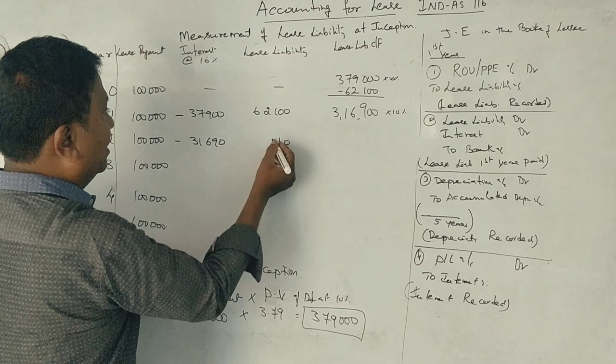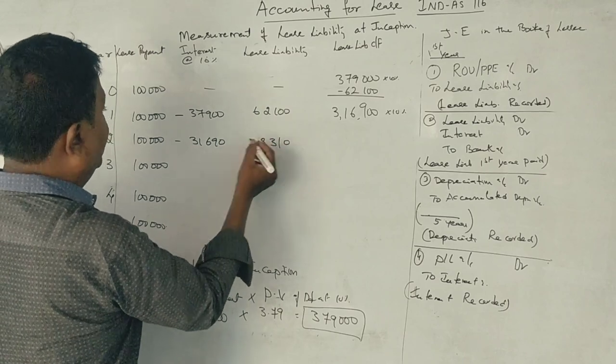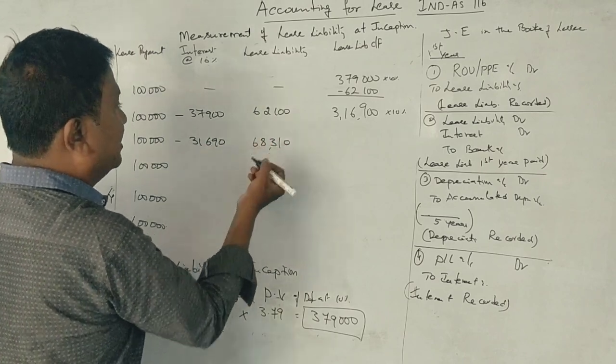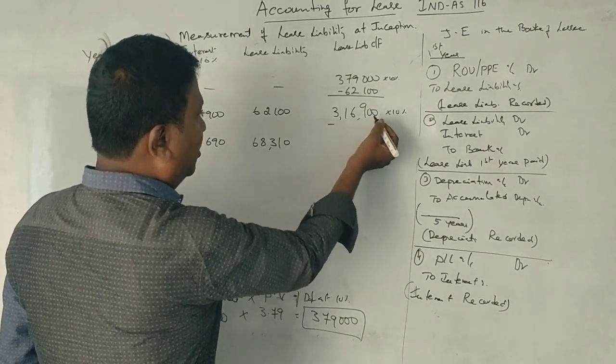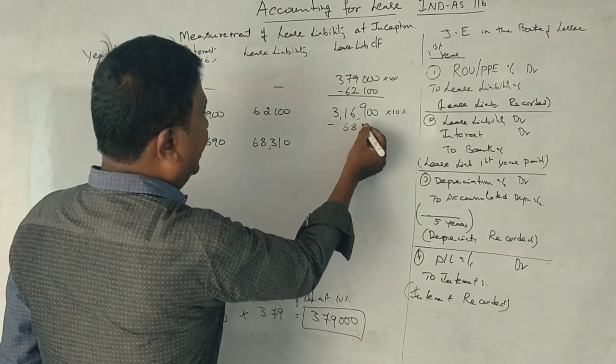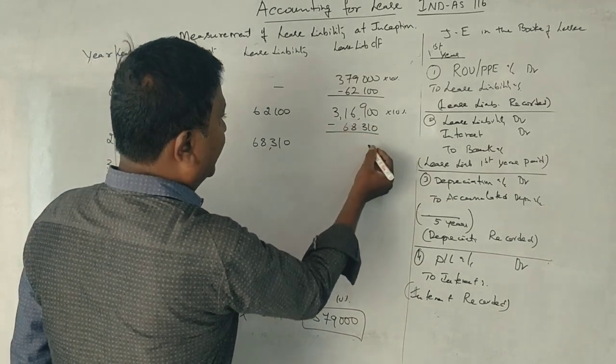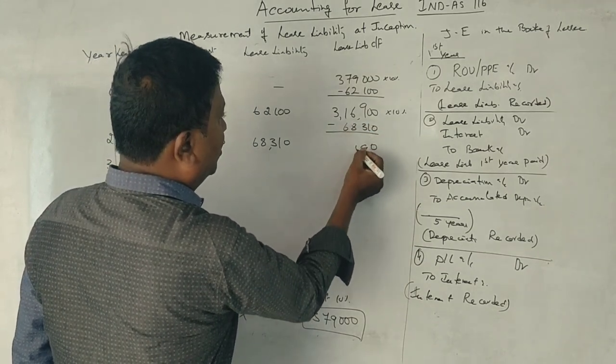1 lakh lease payment, minus 31,690, 68,310 rupees. This amount 3,16,900 rupees, second year lease liability minus. Yes, in total.